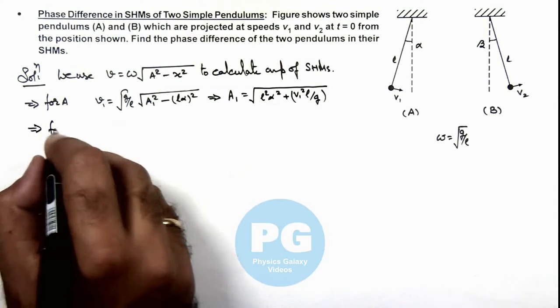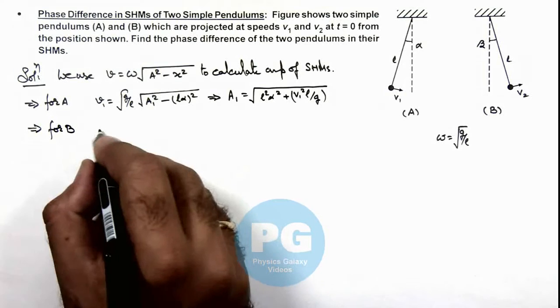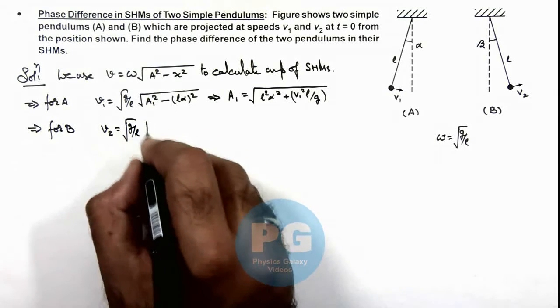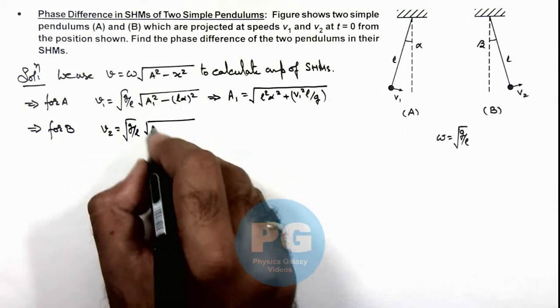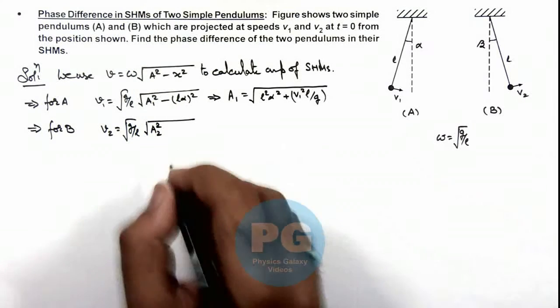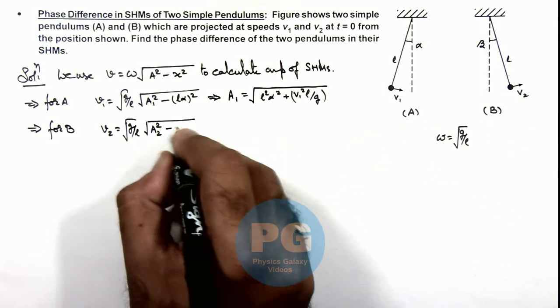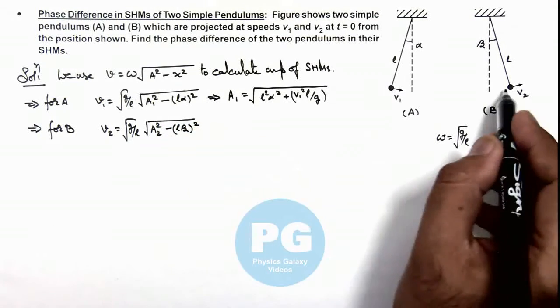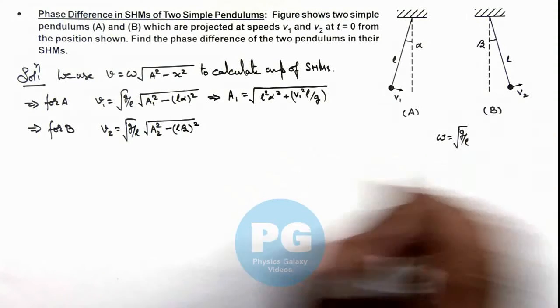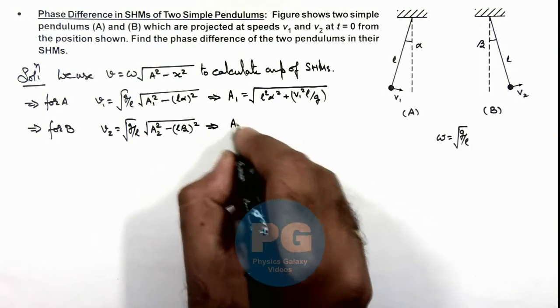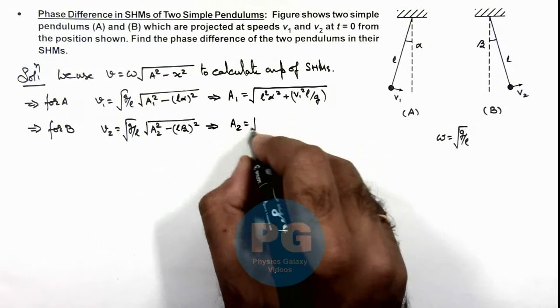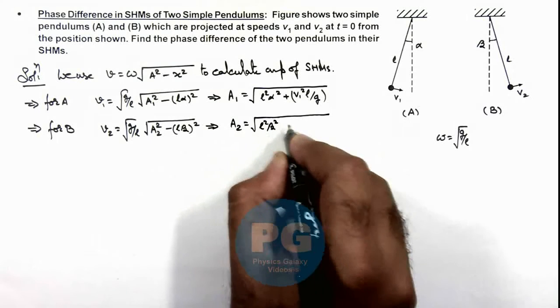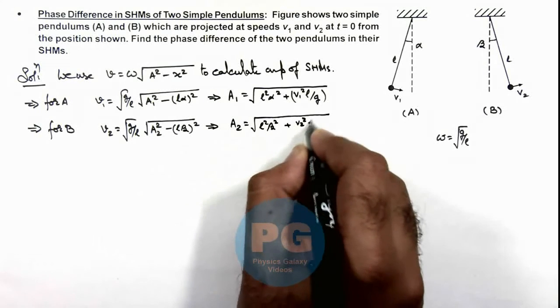Similarly we can write for B: v₂ = √(g/l) multiplied by √(A₂² - (l·β)²), where A₂ is the amplitude of pendulum B, and initially it is at a distance l·β from the mean position. This gives us the amplitude of the second particle as A₂ = √(l²β² + v₂²l/g).